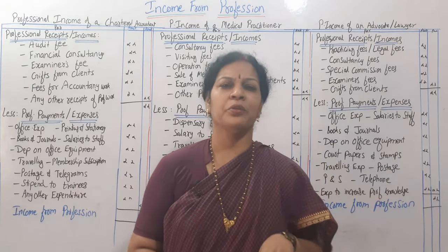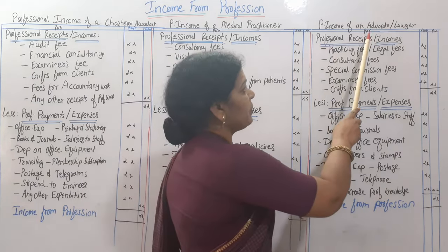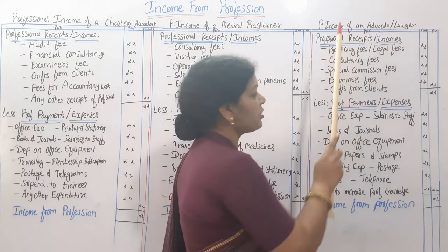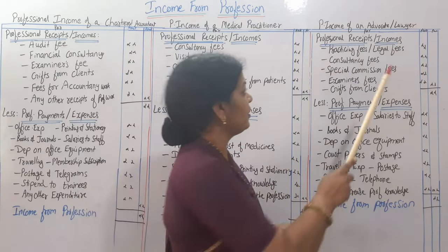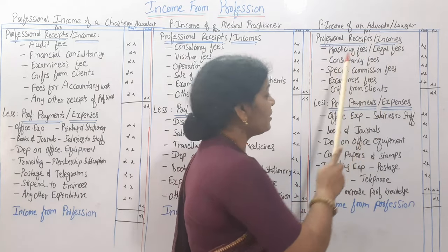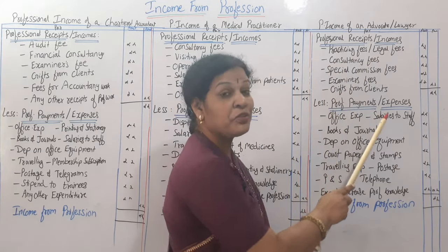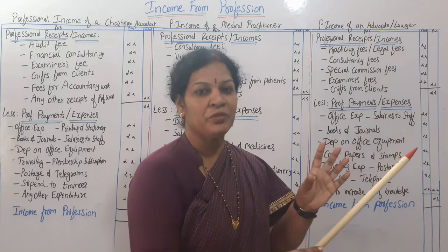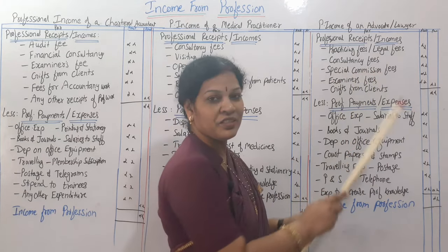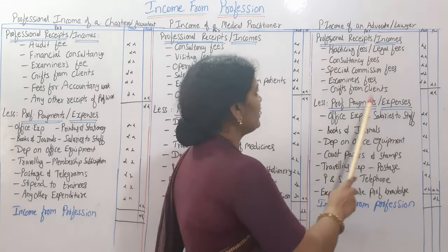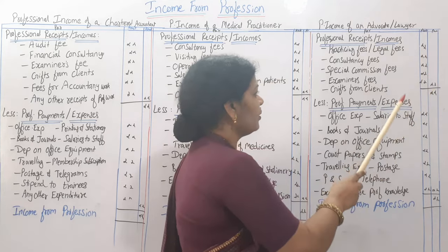Next is the professional income of an advocate or lawyer. The same approach: take their income, deduct expenditure, that's it. The proforma shows particulars and amount columns. Professional receipts or income of a lawyer include: practicing fee, legal fee, consultancy fees, special commission fees, examiner's fee, and gifts from clients. Items like examiner's fee, gifts, and consultancy are similar to those of a doctor. These are totaled and written in the outer column.